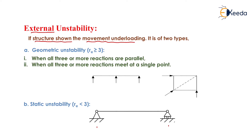External instability is of two types. The first is geometric instability, which occurs when the number of reactions is greater than or equal to three. In that case, we check two conditions: if all three or more reactions are parallel, or if all three or more reactions meet at a single point, the structure is geometrically unstable. When the number of reactions is less than three, we say the structure is statically unstable without checking any further conditions.